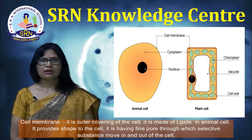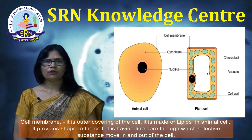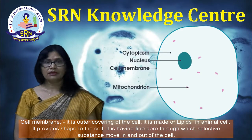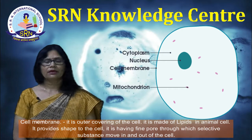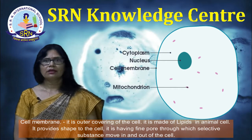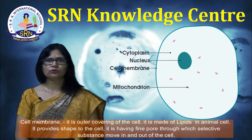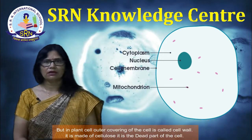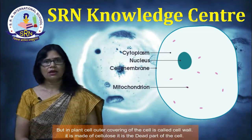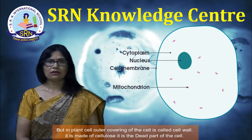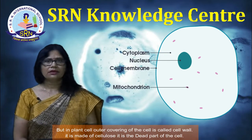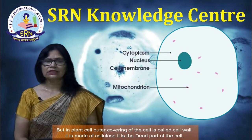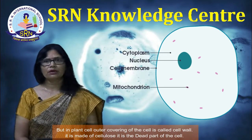Cell membrane is the outer covering of the cell. It is made of lipid in animal cells. It provides shape to the cell and has fine pores through which selective substances move in and out of the cell. But in plant cells, the outer covering is called the cell wall, which is made of cellulose and is the dead part of the cell.